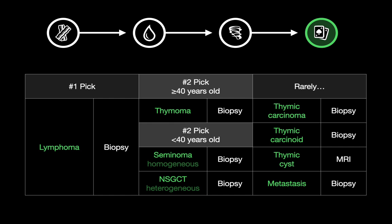Thymomas and germ cell tumors are the most common anterior mediastinal neoplasms after lymphoma. A third of patients with thymoma have clinical evidence of myasthenia gravis — weakness, pharyngeal dysfunction, diplopia — but most thymomas are clinically silent. So if you're dealing with an incidental anterior mediastinal mass, no other evidence of disease, no B symptoms, and the patient's over 40, thymoma becomes a realistic consideration. If you're considering a germ cell tumor and the tumor is uniform in CT attenuation, seminoma is probably more likely than non-seminoma, which tends to be more heterogeneous in appearance on CT.